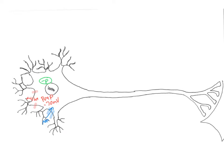In addition to leak channels, the cell body and dendrites have chemically gated channels sensitive to certain chemicals. We talked about acetylcholine, which binds to chemically regulated sodium channels, opening those channels so sodium ions rush into the cell. As sodium ions rush in, the positive charges cause the resting membrane potential to move from negative 70 to negative 69 and even more positive.